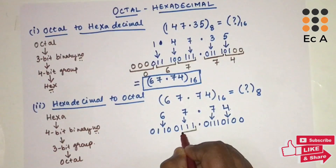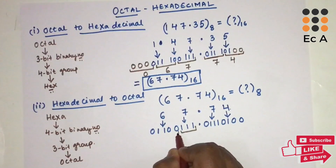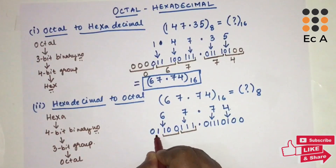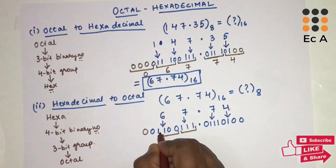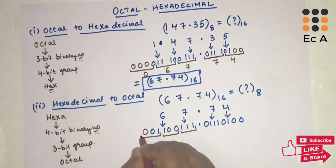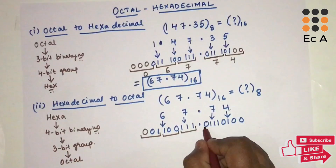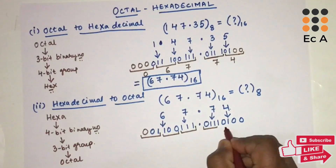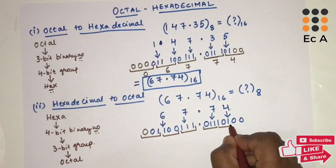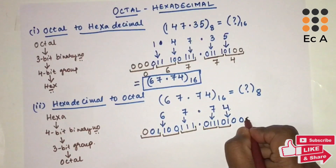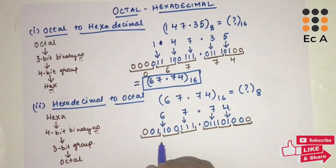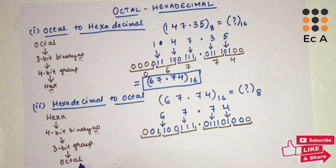Now for this binary number, let us group it in 3 bits. From the binary point towards the left-hand side, grouping in 3 bits: we are left with two bits, so we add one leading zero. Towards the right-hand side, grouping in 3 bits: we are left with two bits, so we add one trailing zero, then group into three bits.